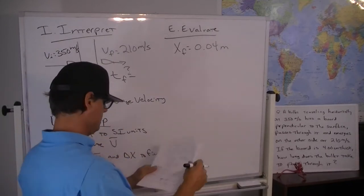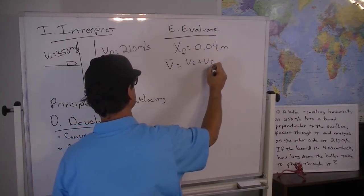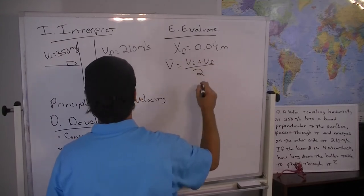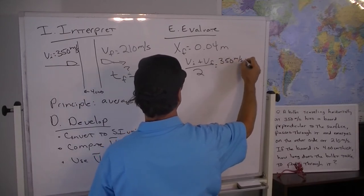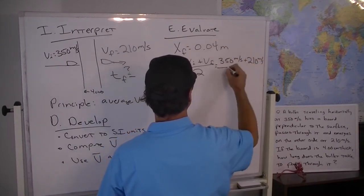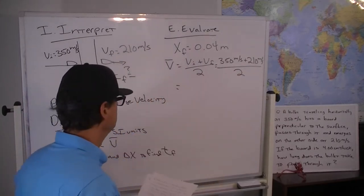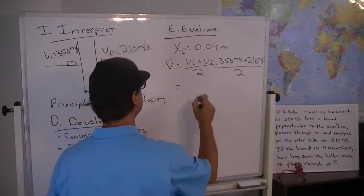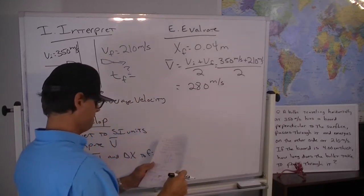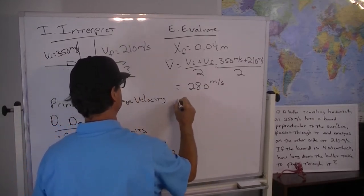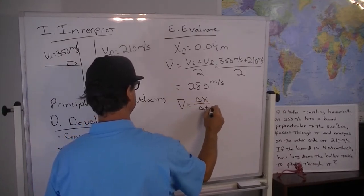And then the average velocity is equal to v initial plus v final over 2. So that's 350 meters per second plus 210 meters per second over 2. So that's 560 meters per second divided by 2, 280 meters per second. And now the average velocity is also equal to the change in position over the change in time.